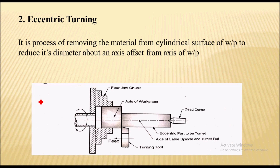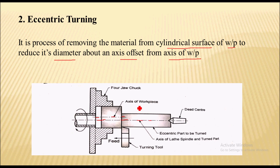Next is eccentric turning, which is again a type of turning operation. In eccentric turning, material is removed from the cylindrical surface of the workpiece to reduce its diameter about an axis offset from the axis of the workpiece. Here you can see the axis of the workpiece is offset from the axis of the spindle. This operation is called eccentric turning because the workpiece is eccentric, and it is held in a four jaw chuck.